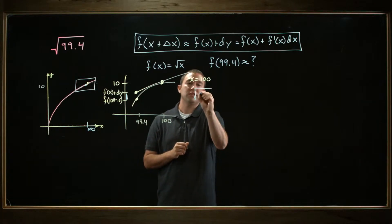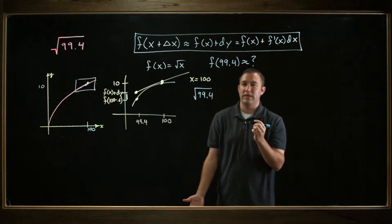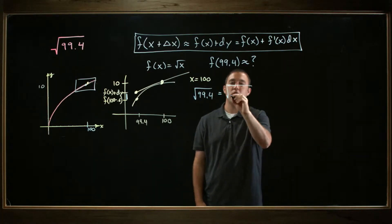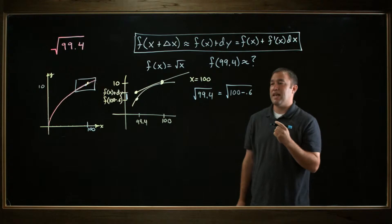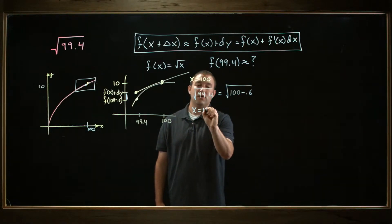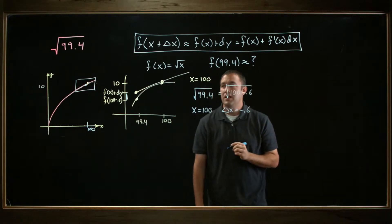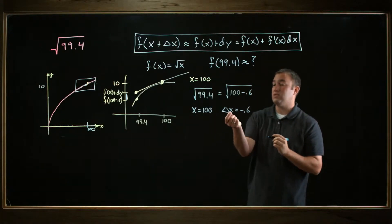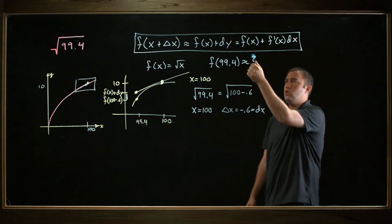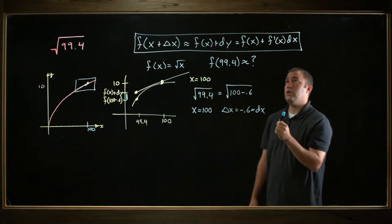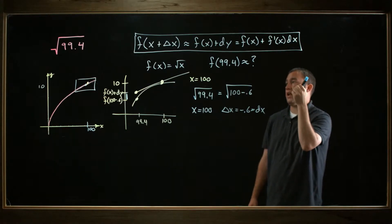If I want to know the square root of 99.4, well, I know that plugging in 100 into the square root would be easy. So I could think of this as the square root of 100 minus 0.6. If I look at it like that, then x would be 100 and delta x would be negative 0.6. In the derivation of this, it's not too hard to see that delta x and dx are actually the same. But what I do want to do is try to plug into this formula. In order to use this formula, I need f of x, which I've got—it's square root of x—and I need f prime of x, which I don't yet have. So let's go ahead and find that.